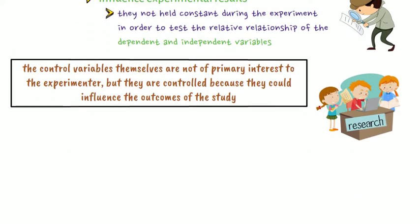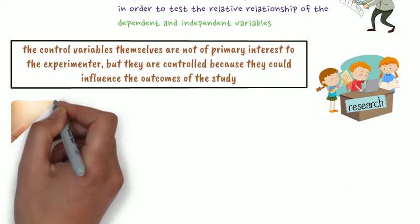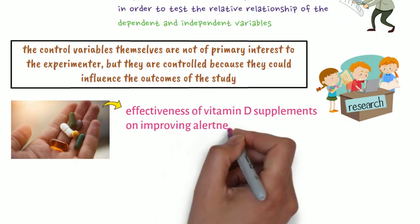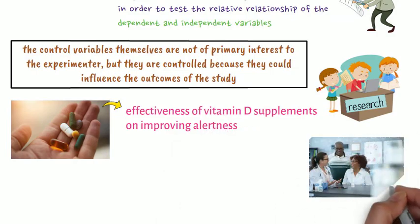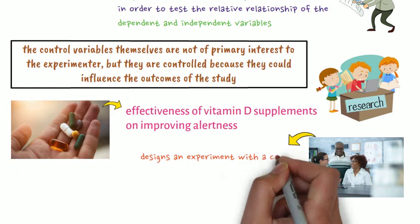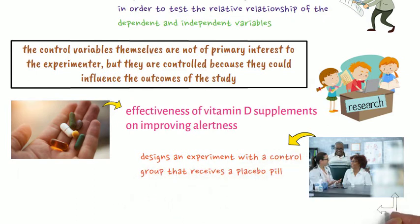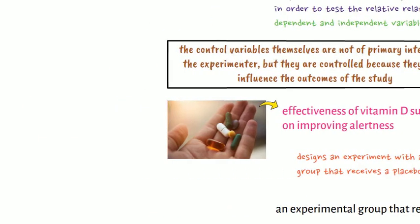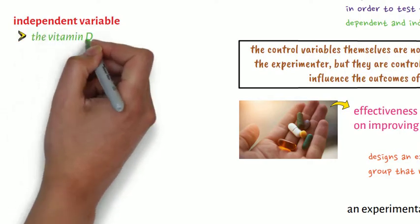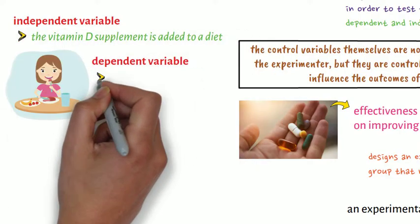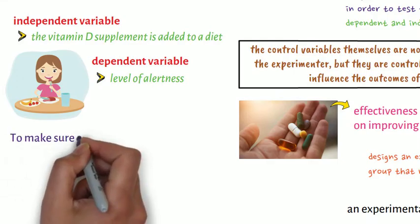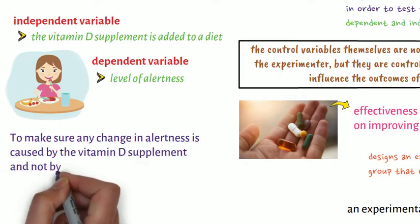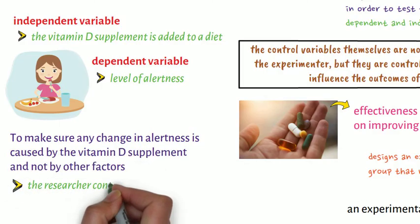Let us consider the example below. A researcher wants to study the effectiveness of vitamin D supplements on improving alertness. The researcher designs an experiment with a control group that receives a placebo pill and an experimental group that receives the supplement. The independent variable is whether the vitamin D supplement is added to a diet, and the dependent variable is the level of alertness. To make sure any change in alertness is caused by the vitamin D supplement and not by other factors, the researcher controls these variables that might affect alertness.